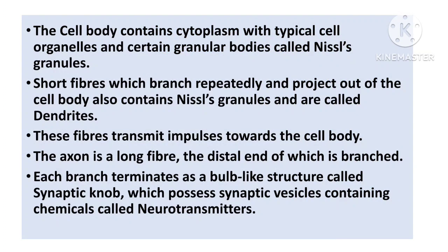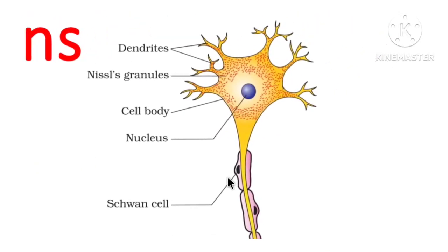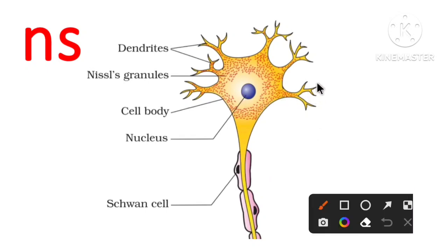Short fibers which branch repeatedly and project out of the cell body also contain Nissl granules and are called dendrites. The branching forms which arise from the cell body are the dendrites. We can see here that the cell body has these branching structures coming out, and the Nissl granules are present in the cell body as well as in the dendrites.